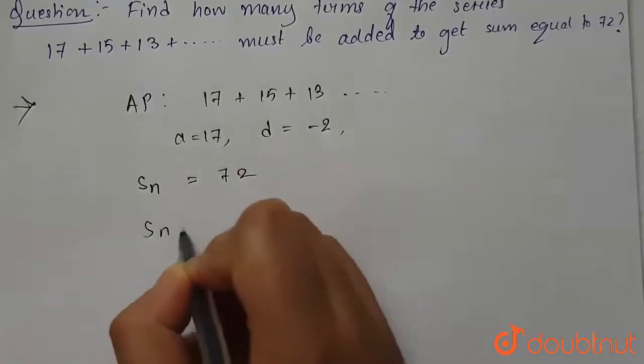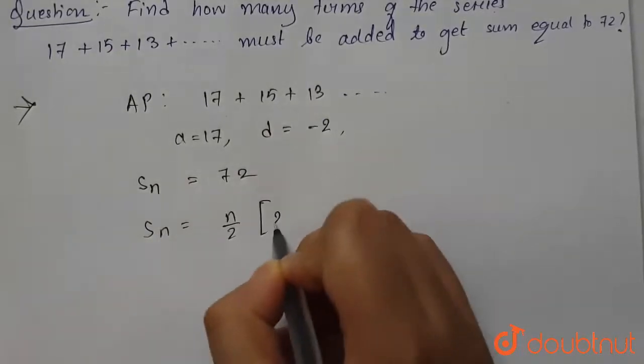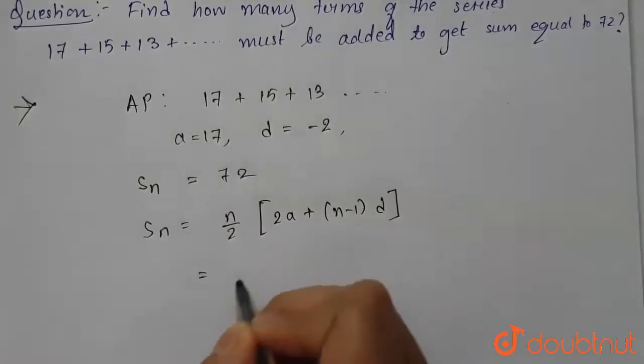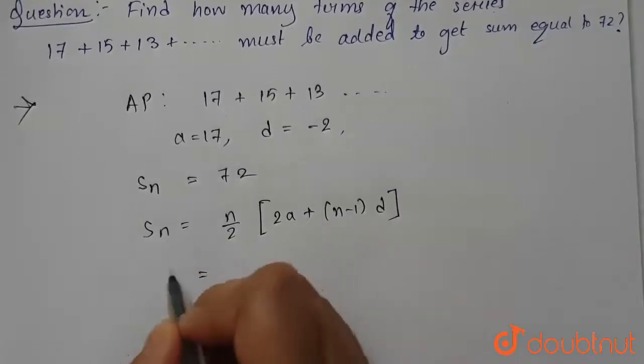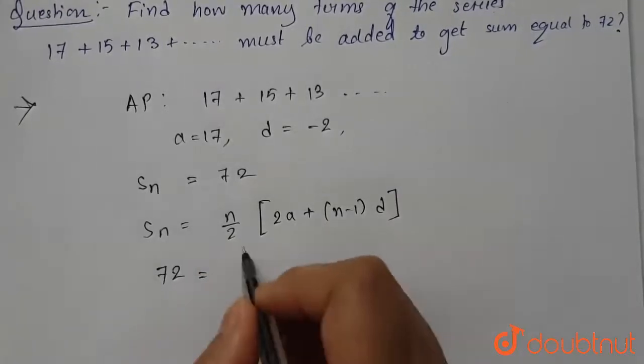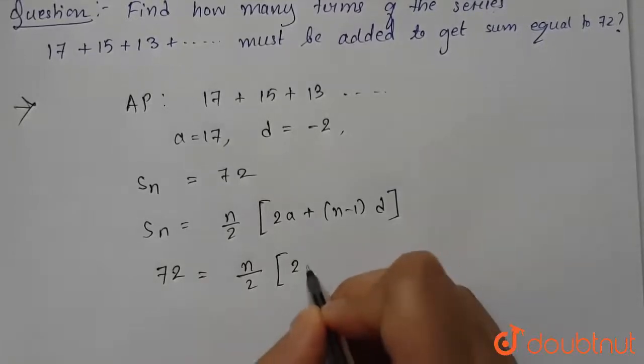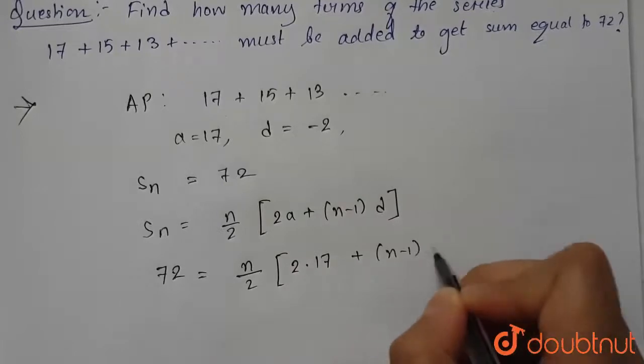Now we know that Sn equals n/2 × [2a + (n-1)d]. We have to find the value of n, so Sn is given as 72, so this will be n/2 × [2(17) + (n-1)(-2)].